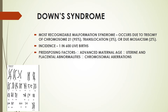We have studied about Down syndrome since 11th standard. As we know, this is a genetic disorder in which there is trisomy of chromosome number 21. The incidence of Down syndrome is 1 in 600 live births. The predisposing factors are: advanced maternal age - if the mother's age is about 35, the chances of Down syndrome are more - uterine and placental abnormalities, and chromosomal aberrations.